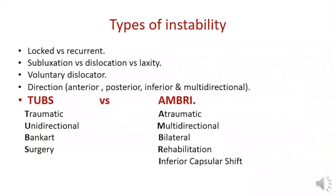The main two types of shoulder instability are TUBS — traumatic unidirectional instability with Bankart lesions that usually require surgery — and AMBRI — atraumatic multidirectional bilateral instability which responds well to rehabilitation and may need an inferior capsular shift.